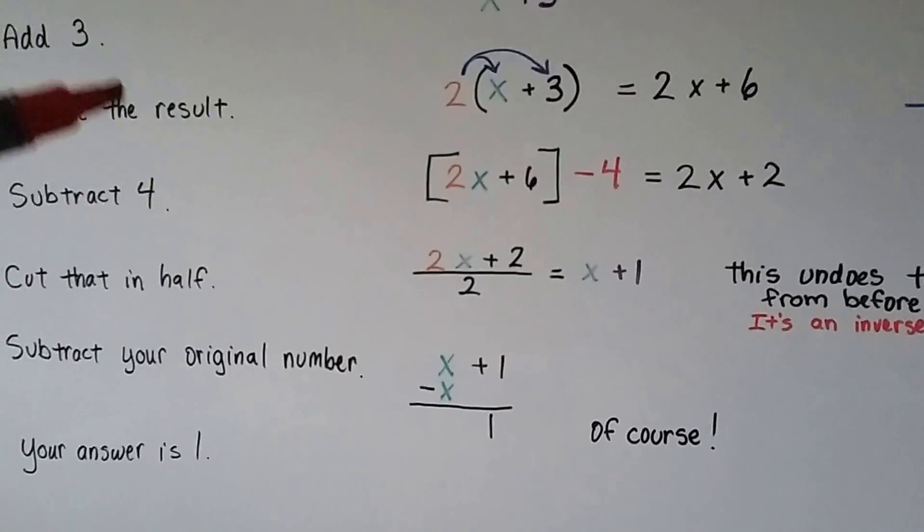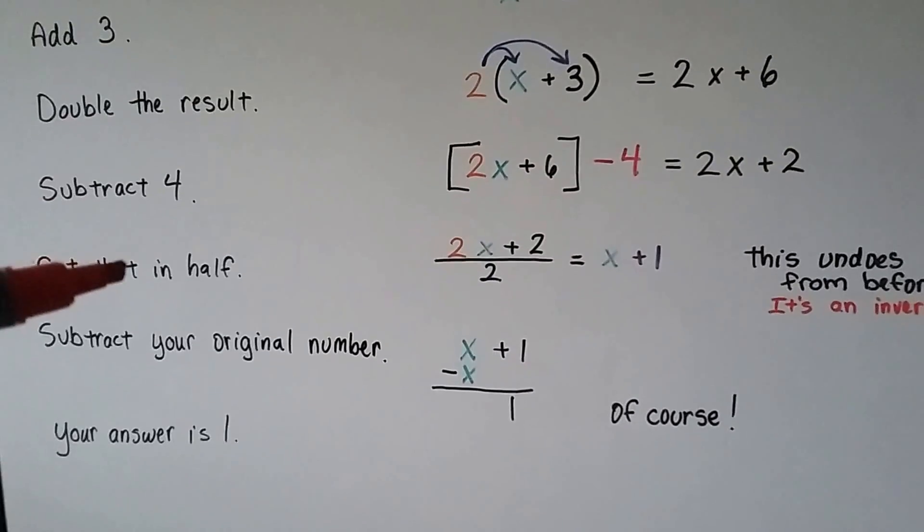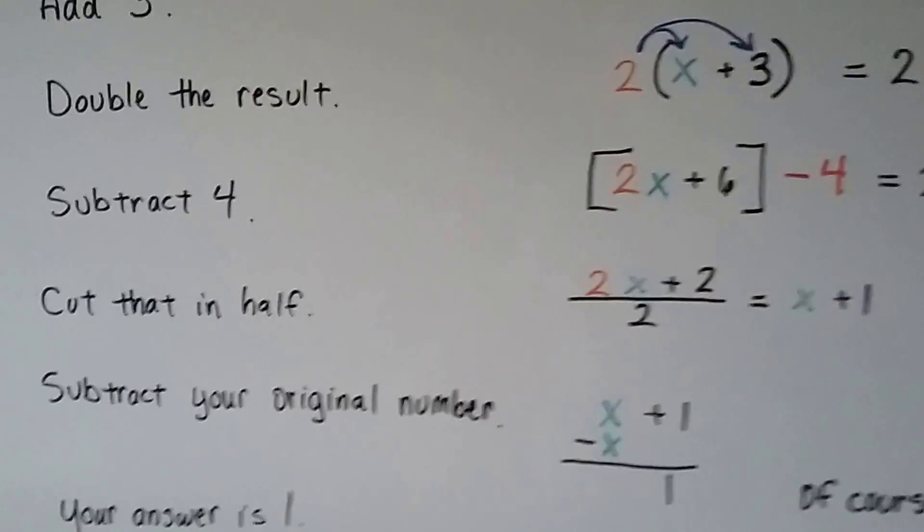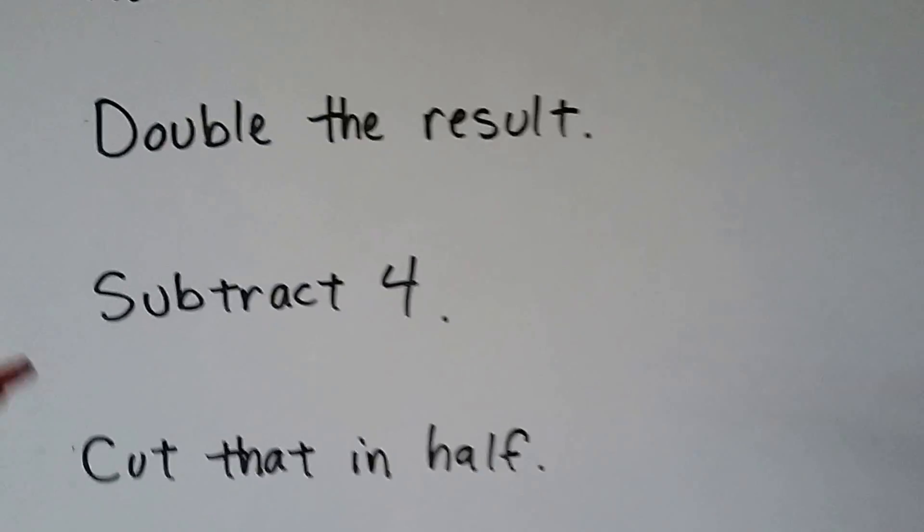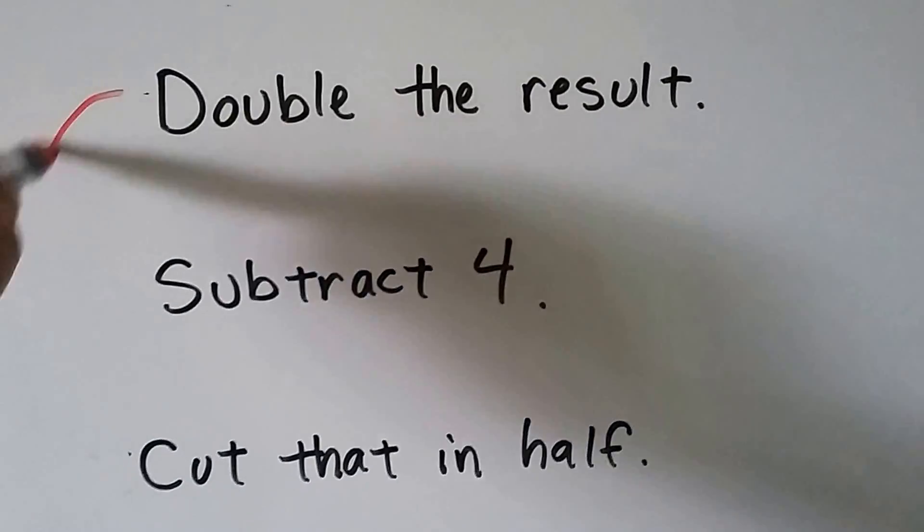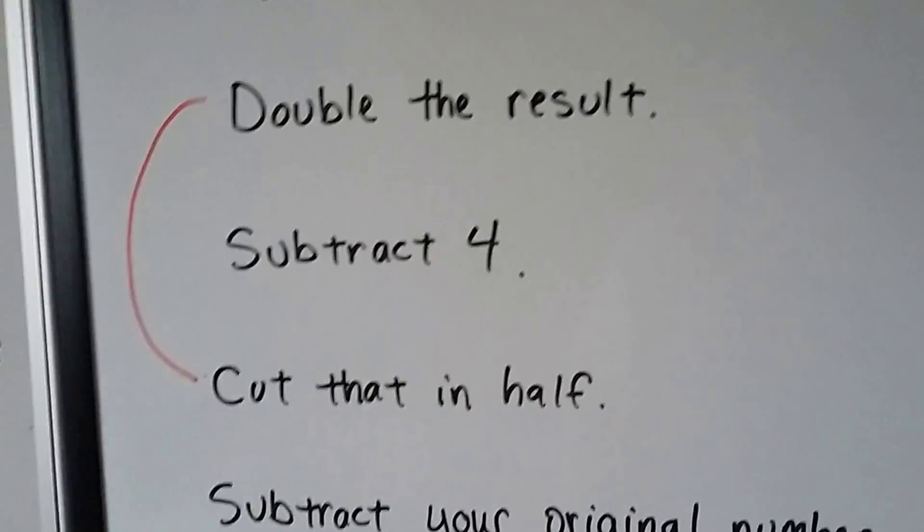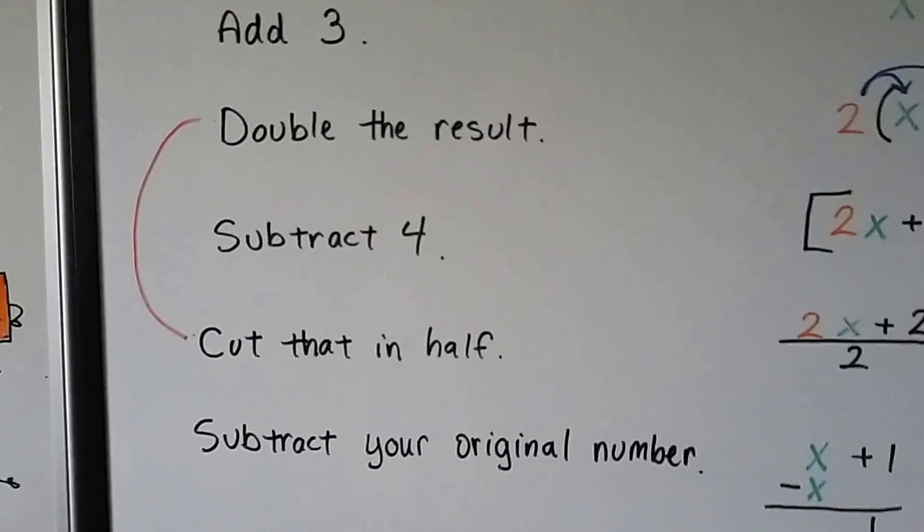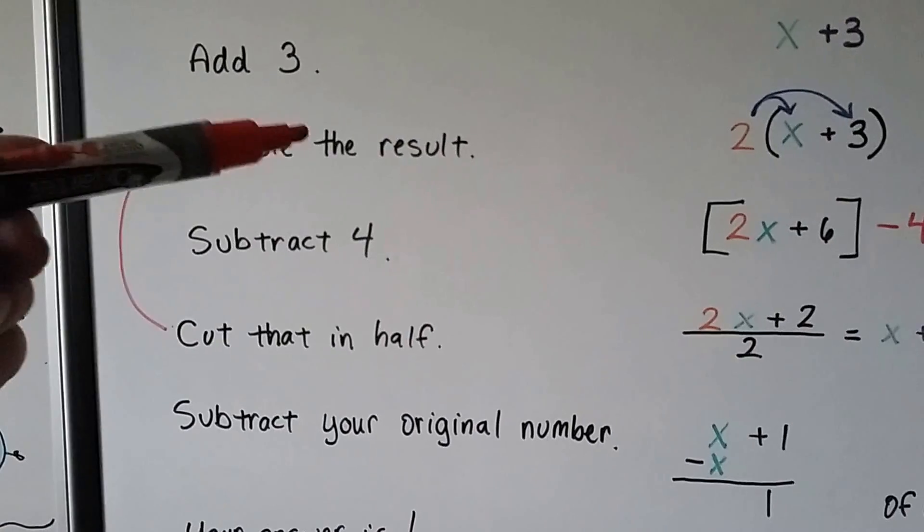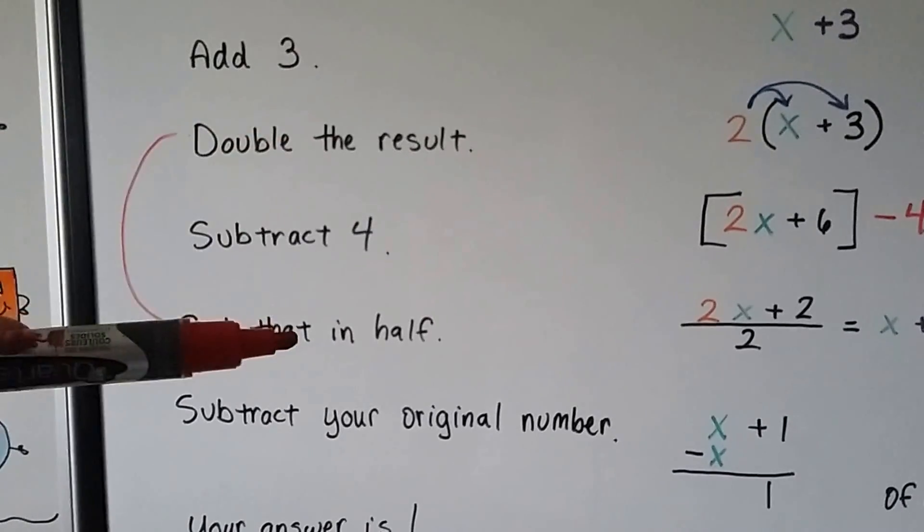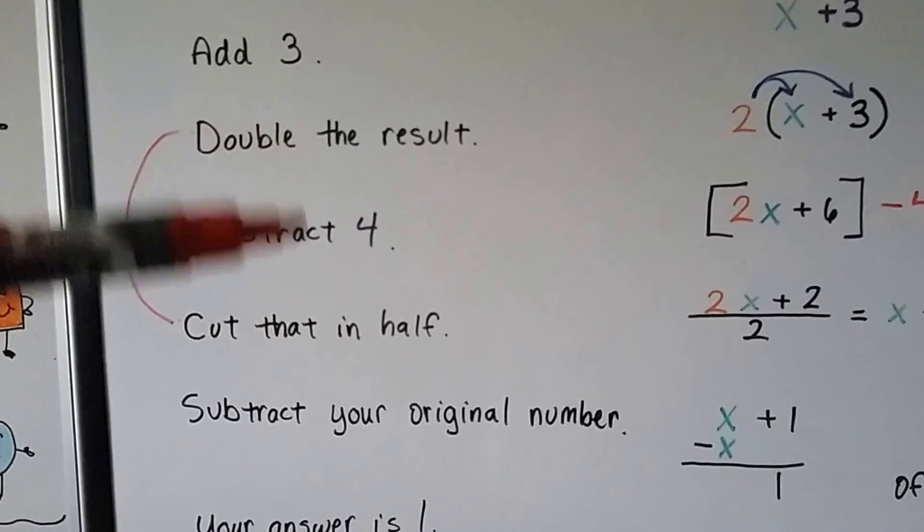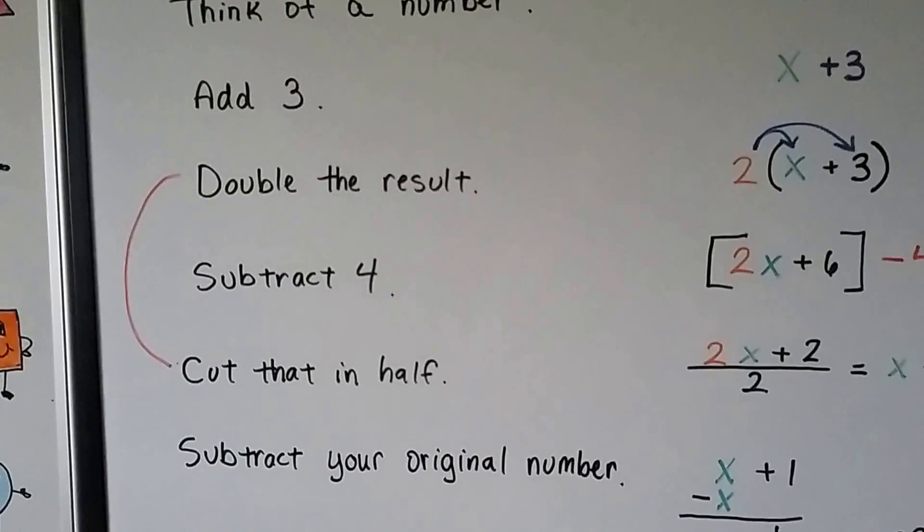Well, part of it is when it said to double the result and then cut it in half, that was an inverse operation. Doubling the result means we're multiplying. Cutting it in half means we're dividing. So we multiplied it by 2 and then divided it by 2. So these two stages just created a zero pair. They eliminated each other.